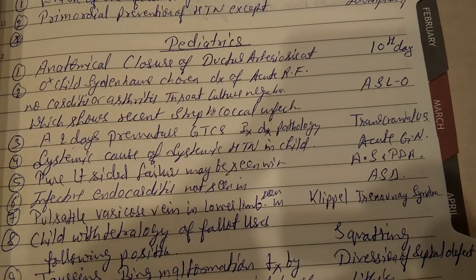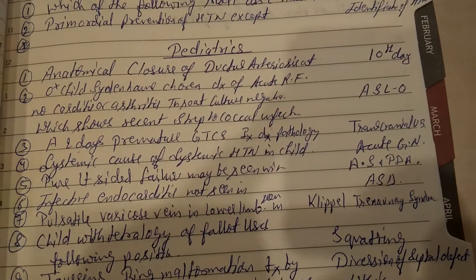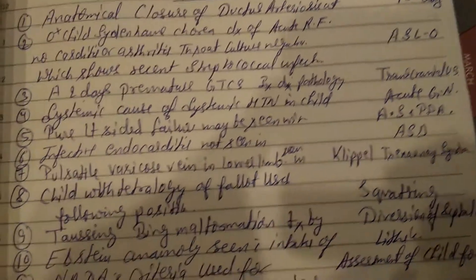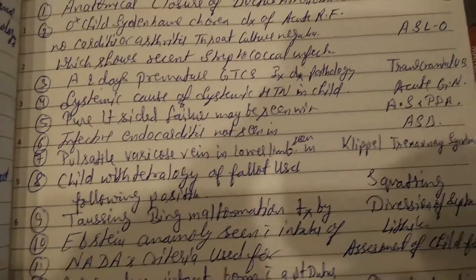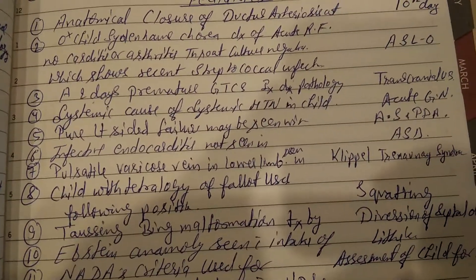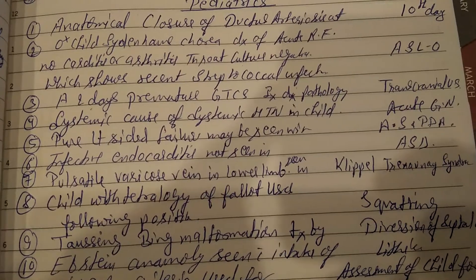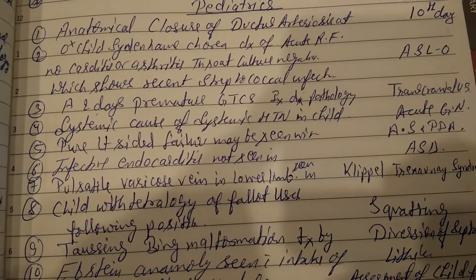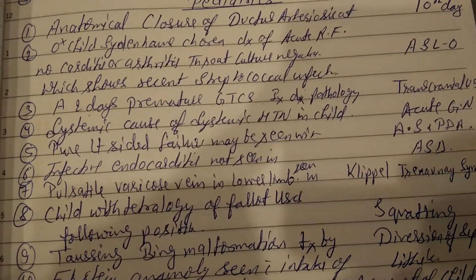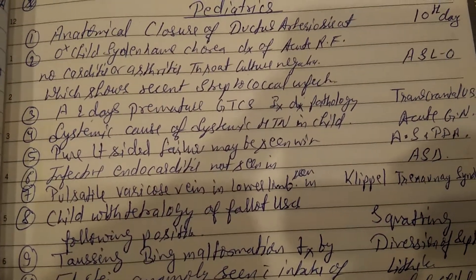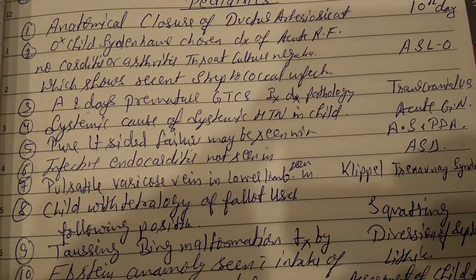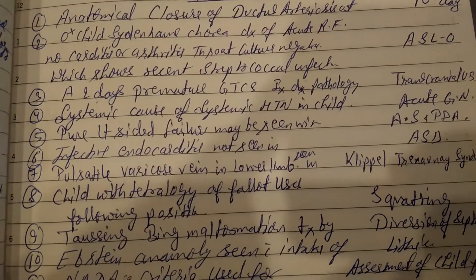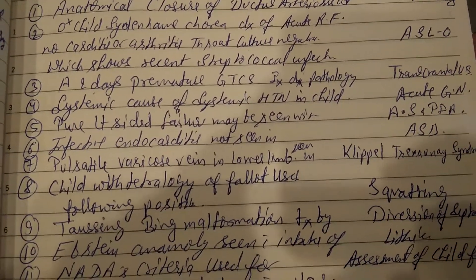Question number three: a 2-day-old premature infant with generalized seizures — the investigation to diagnose the pathology is transcranial ultrasonography. Question number four: the most common systemic cause of hypertension in a child is acute glomerulonephritis.